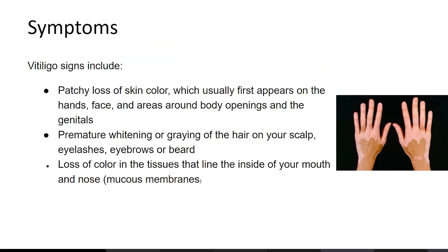When you have vitiligo, you experience patchy loss of skin color, which usually appears first on the hands, face, and areas around body openings and the genitals. There is also premature whitening or graying of hair on your scalp, eyelashes, eyebrows, or beard. Additionally, there can be loss of color in the tissue lining the inside of your mouth and nose. Essentially, patches lose color and your hair starts graying early.